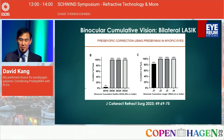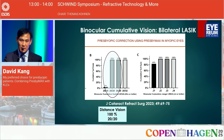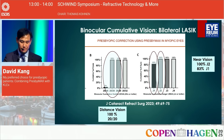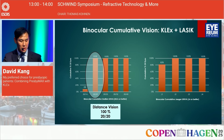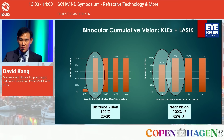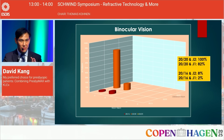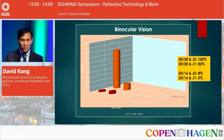In our published JCRS paper with bilateral LASIK, 100 percent of patients achieved binocular distance vision of 20/20 and near vision of J2. With the CLEX and LASIK combination at three months follow-up, again 100 percent achieved binocular cumulative vision better than 20/20, near vision 100 percent J2, and 82 percent J1.